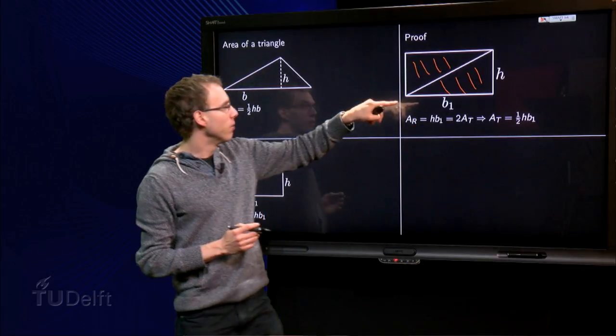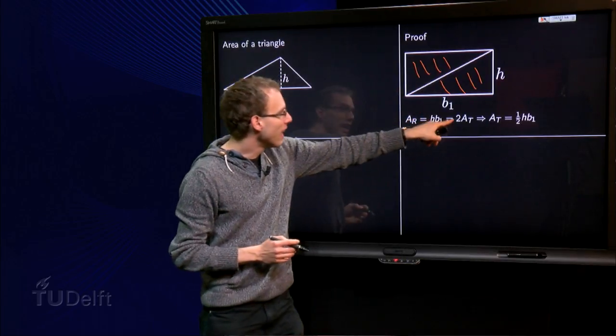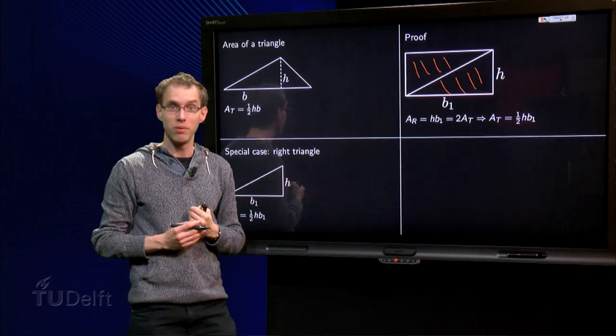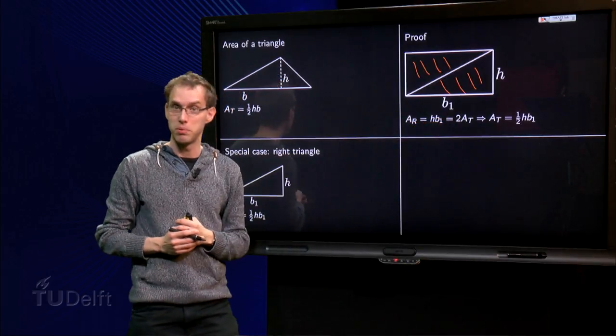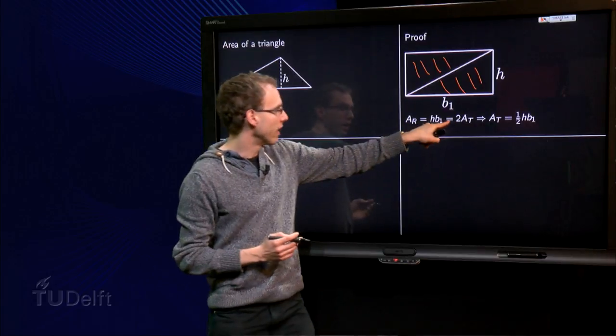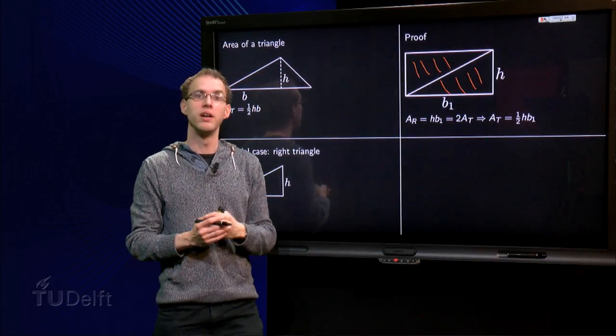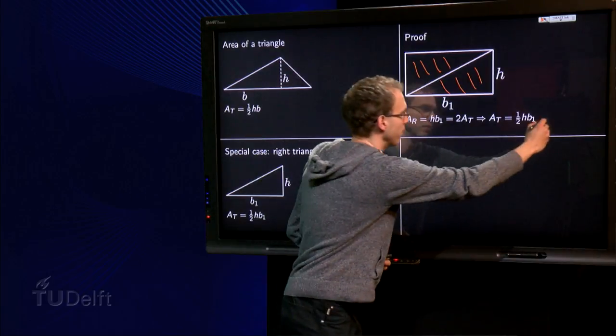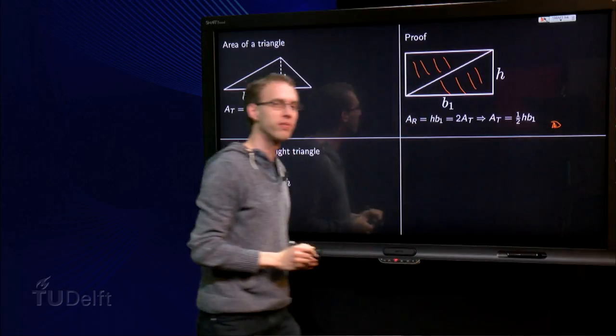But now I know that the area of my rectangle is twice the area of a triangle. So I know two times the area of my triangle equals h times b1 and I can solve for the area of the triangle which equals one-half times h times b1. Which concludes the proof, and then we often write a small square over here, like that.